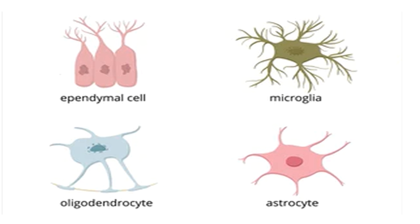Neuroglia are the supporting cells of the nervous system. They are smaller than neurons and are not excitable cells. As we learned about the neuron, it is an excitable cell that can initiate and propagate impulses and communicate with other neurons. But this is not the case with neuroglia. Instead, they outnumber neuronal cells and are much greater in number than neurons.